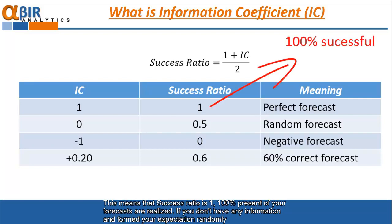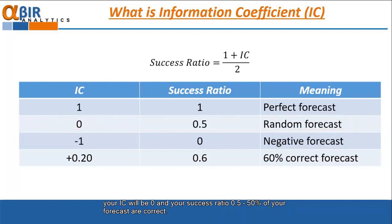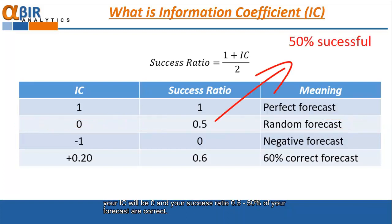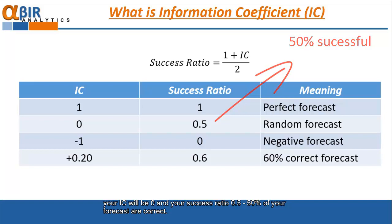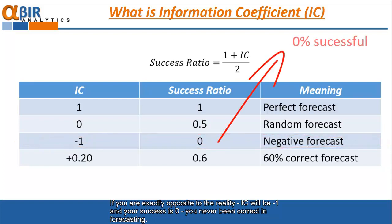If you don't have any information and form your expectation randomly, your IC will be 0 and your success ratio 0.5. 50% of your forecasts are correct. If you are exactly opposite to the reality, IC will be minus 1 and your success is 0. You've never been correct in forecasting.